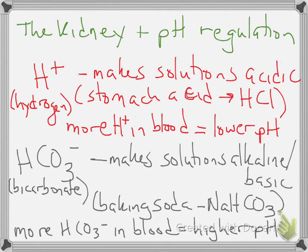We have two ions that we're going to talk about, and for those of you without too much chemistry background, I think this will be helpful. H+ is known as the hydrogen ion, and the hydrogen ion is basically what makes solutions acidic. Literally, the pH scale is a measurement of how much hydrogen ion you have in a solution, so the more hydrogen you have in the blood, the lower the pH is going to be.